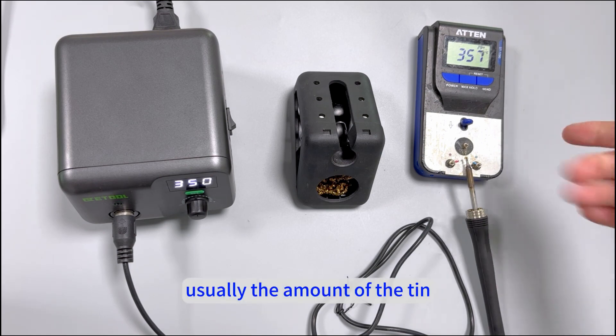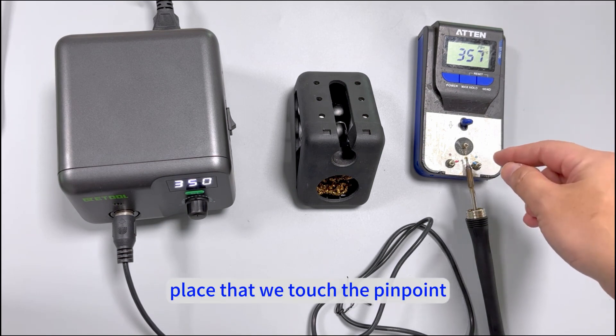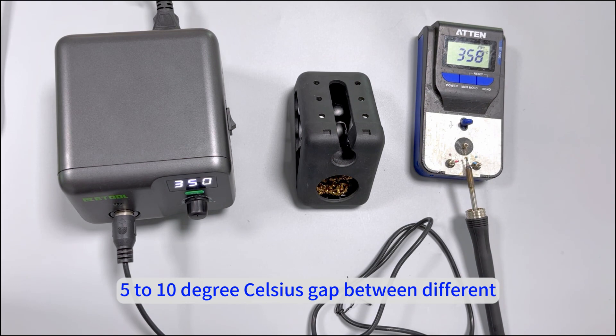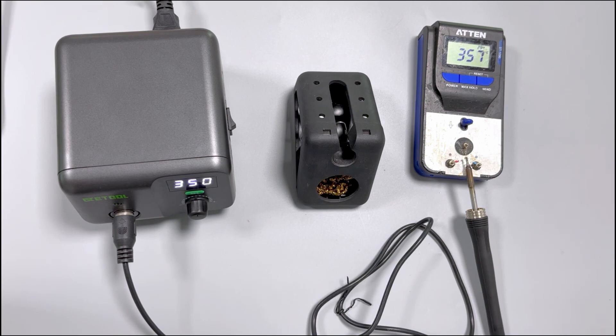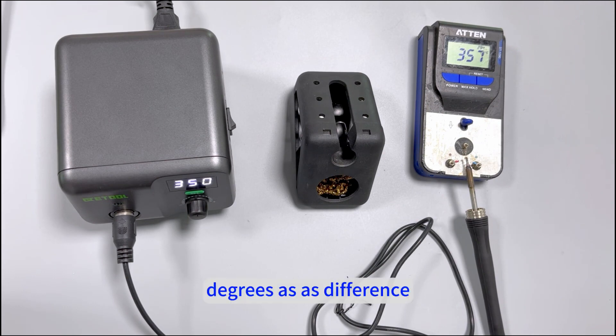Usually, the amount of tin and different places that we touch the tip, there will be 5 to 10 degrees Celsius gap between different measurements. And you can see that is about 7 or 8 degrees Celsius difference.